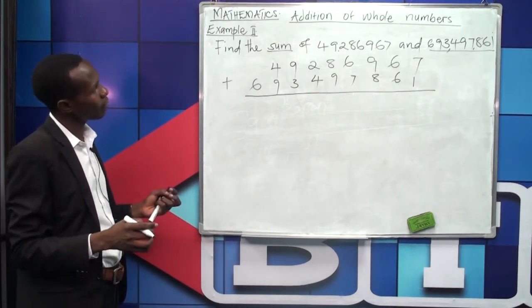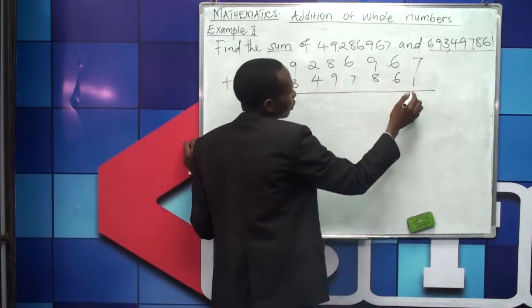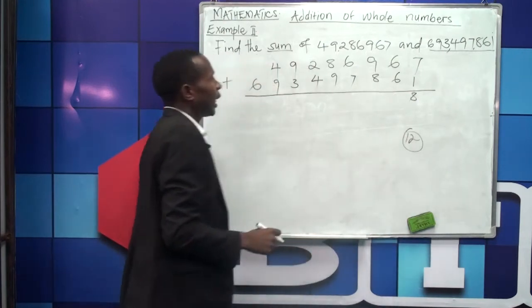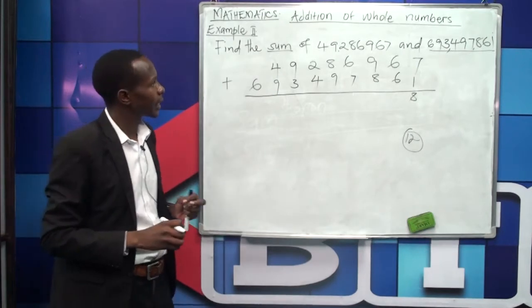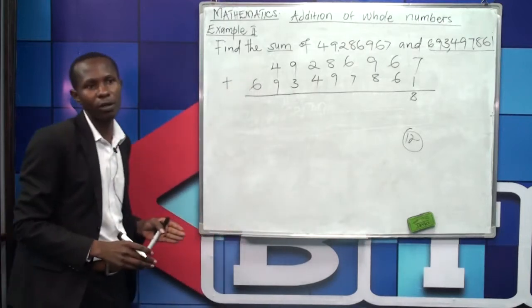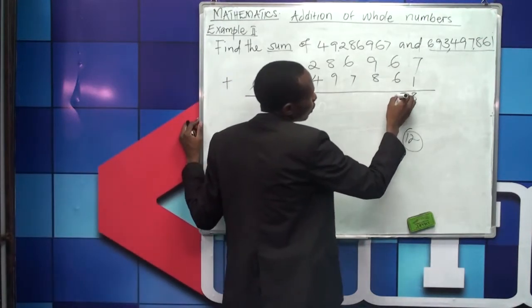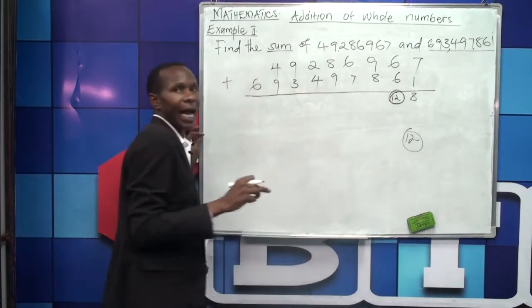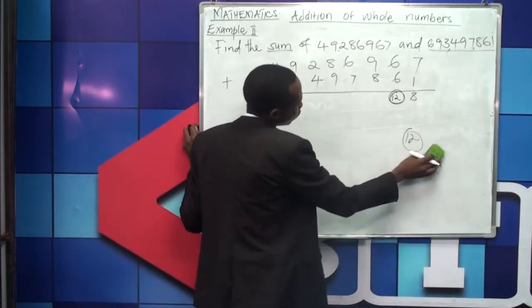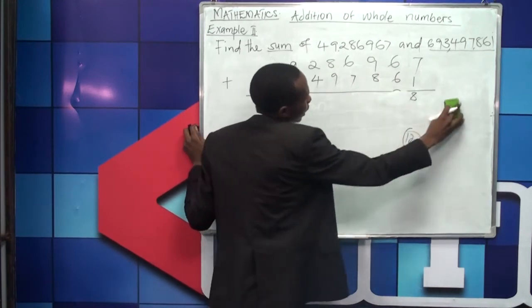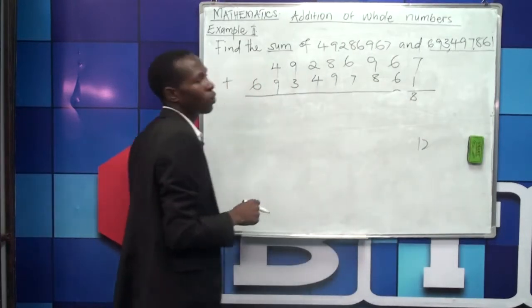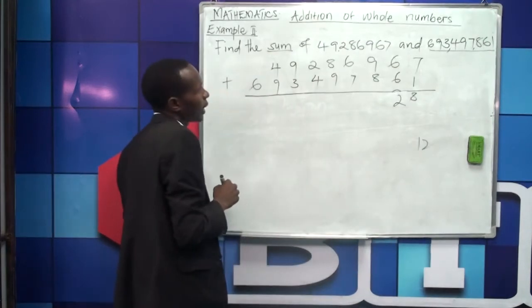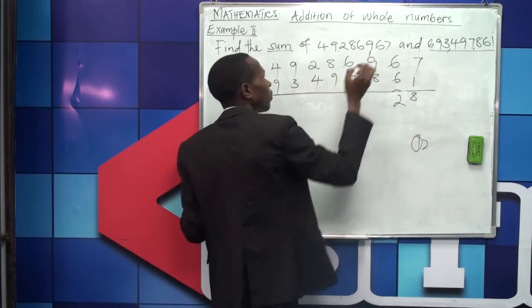At the place value of ones, we have 7 and 1, so 7 plus 1 gives us 8. Then 6 plus 6 gives us 12. We are not allowed to write two digits at one place value, so out of 12 we write 2 under the tens place and regroup the 1 to the next place value.